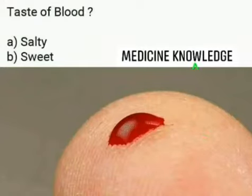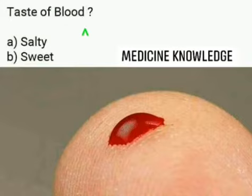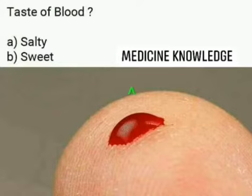Let's see the next MCQ. So what is the taste of blood? Before answering this question, let's know something about blood. Blood is formed by two main components: blood cells, which include RBC (red blood cells), WBC (white blood cells), and the third one is platelets.